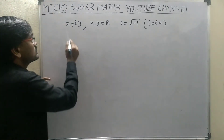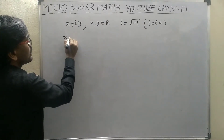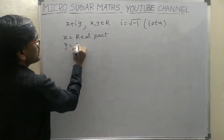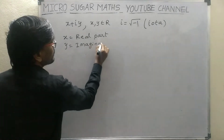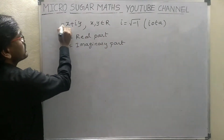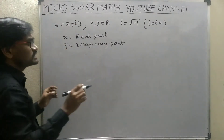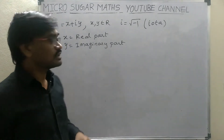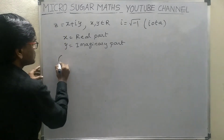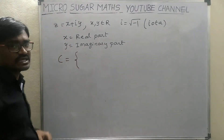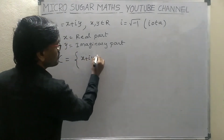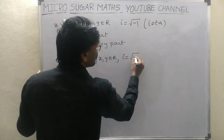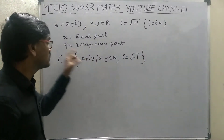Here X is called the real part and Y is called the imaginary part. The complex number X plus iY is represented by small Z. Therefore Z is equal to X plus iY, or Z1, Z2, Z3 and so on. The set of complex numbers is denoted by capital C, and is defined as X plus iY where X and Y are real numbers and i is the square root of minus 1.